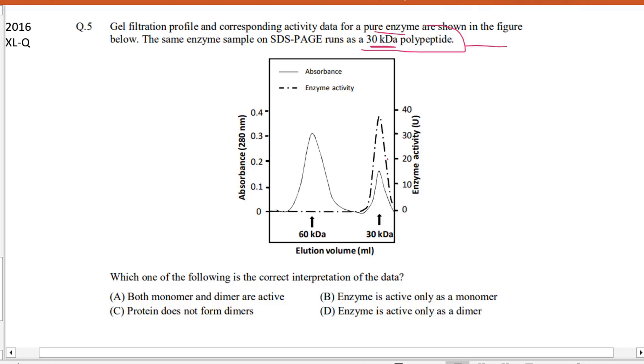So this is what we can understand from the graph. Now we have to answer the question: which of the following is the correct interpretation of the data? A: both monomer and dimer are active. B: enzyme is only active as monomer. C: proteins do not form dimer.